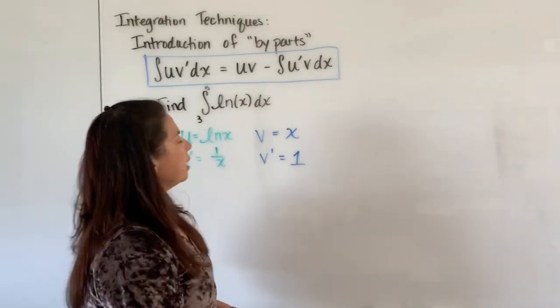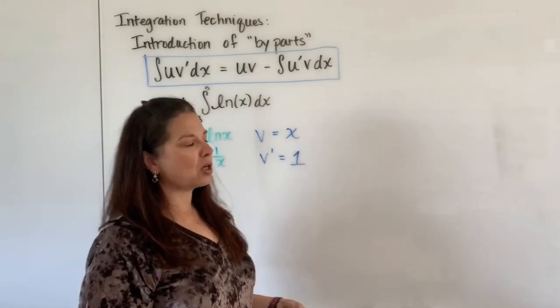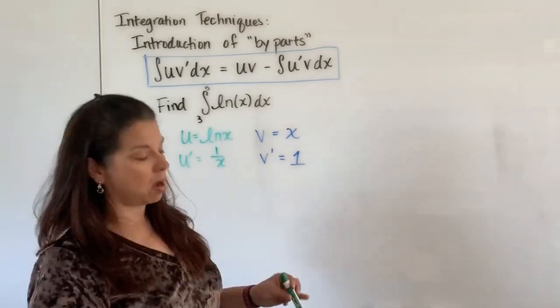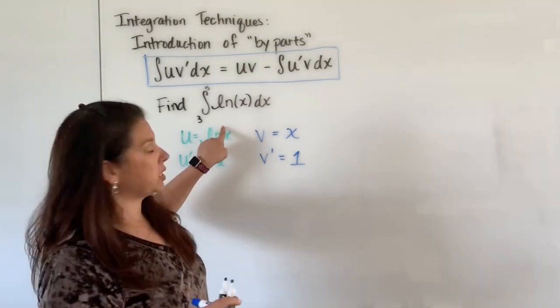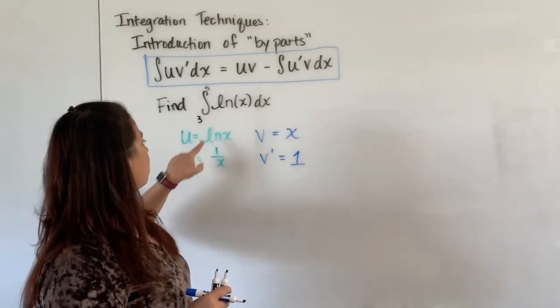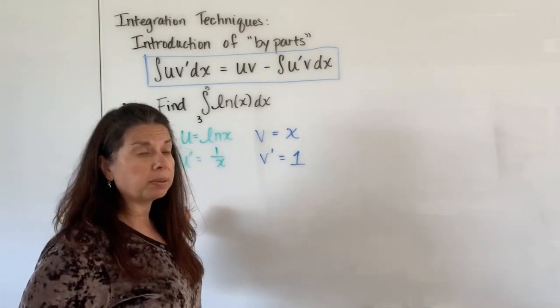Okay, now why did I choose the u to be natural log x and not maybe the one? Well if I had let u be one, let's just pretend, I would have found the derivative of one which would be zero. Hmm, that's a problem.